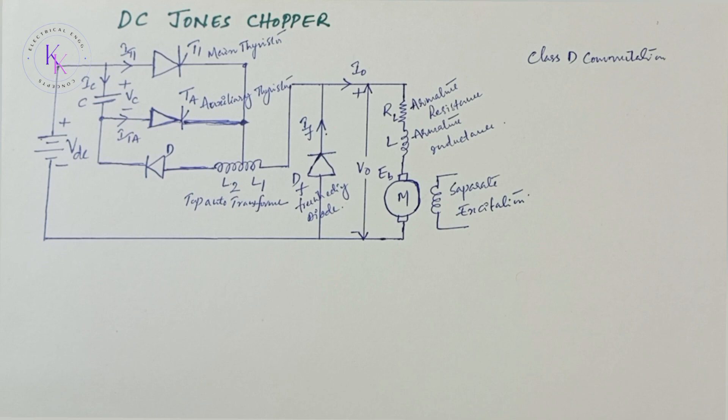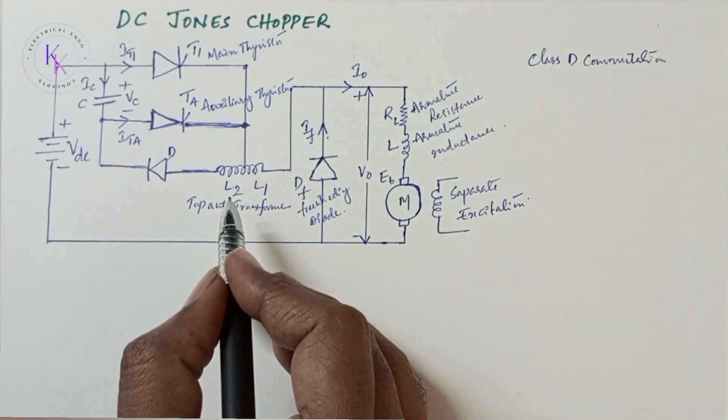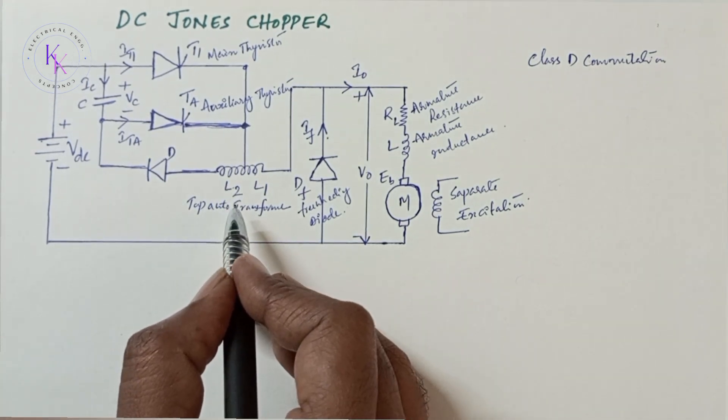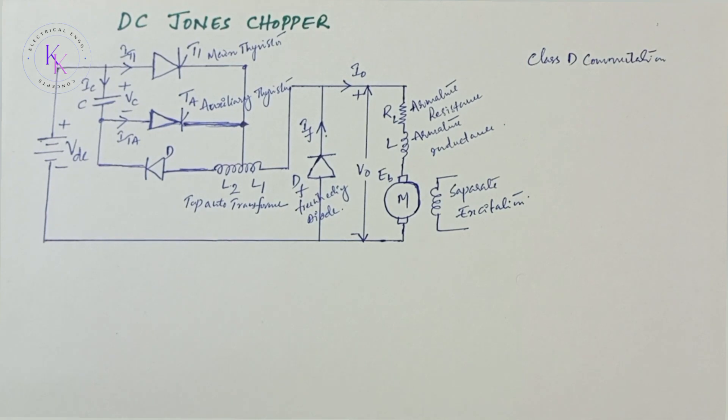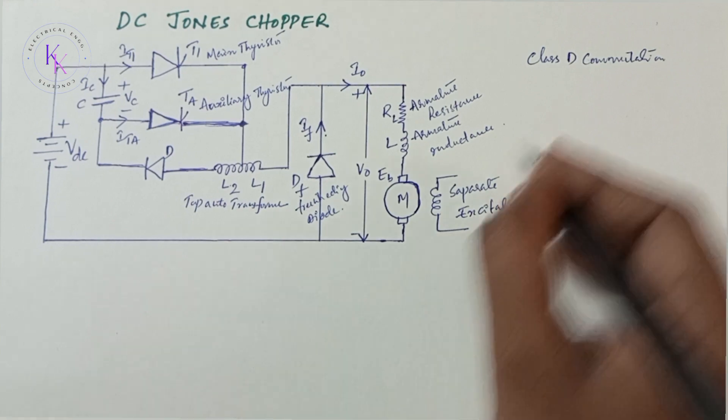The saturable reactor core of Morgan's Chopper is replaced with tapped auto transformer in this chopper, which ensures reliable commutation and eliminates the problem of commutation failure. This chopper works in two modes.